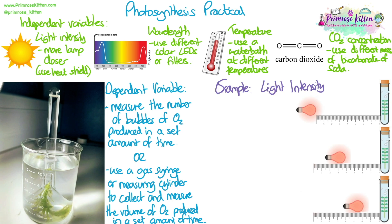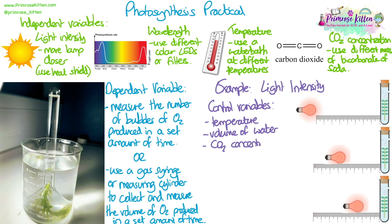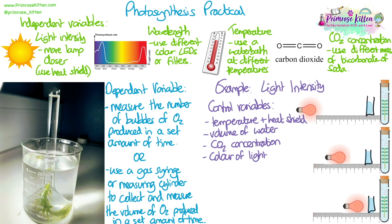Let's look at an example method with light intensity being the independent variable. The control variables will need to be anything other than light intensity that could affect the rate of photosynthesis: we need to keep the temperature the same, the volume of water the pondweed is in the same, the carbon dioxide concentration — so the mass of sodium hydrogen carbonate used — the same, and the colour of light the same. The type of pondweed used should also be kept the same. I've placed a heat shield, which is just a beaker of water, between the lamp and the pondweed, so that heat energy from the lamp is absorbed into that water but the light energy passes through to our plant.